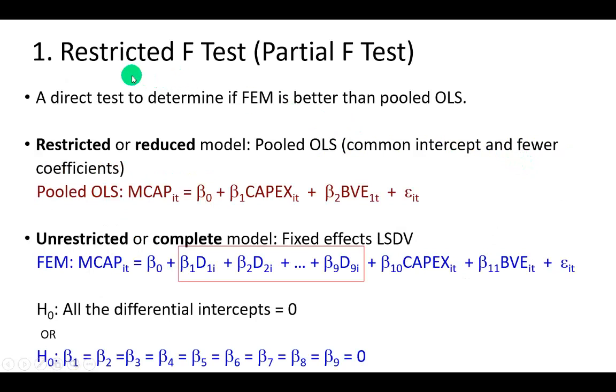With respect to the restricted F-test, also referred to as partial F-test, our restricted model is going to be the pooled OLS model because it uses common intercepts and fewer coefficients. As you can see here, only three coefficients in the case of our model.